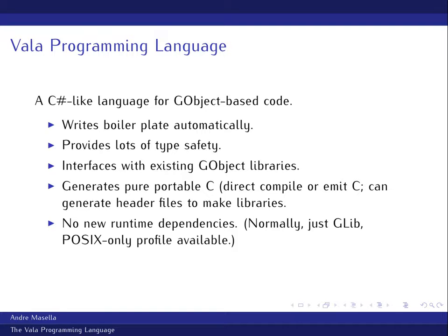You're not introducing new runtime dependencies because it's just generating C code. You do have GLib, which you probably already have on a standard Linux system. If you really want, Vala will generate POSIX-only code so you don't even need GLib, but you lose certain features like inheritance if you do that.